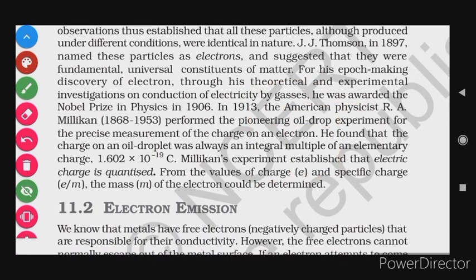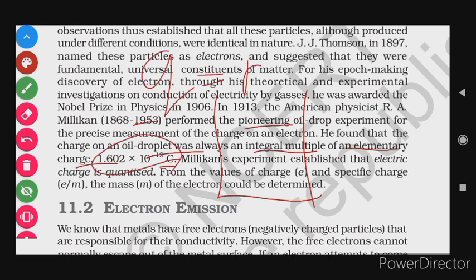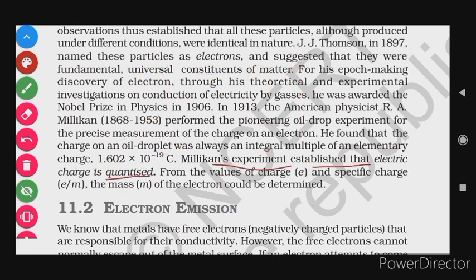In 1930, the American physicist R.A. Millikan performed the pioneering oil drop experiment for the precise measurement of the charge on an electron. He found that the charge of an oil drop was always an integral multiple of the elementary charge 1.60 × 10^-19 coulombs, establishing that electric charge is quantized. From the values of charge and specific charge, the mass of the electron could be calculated.